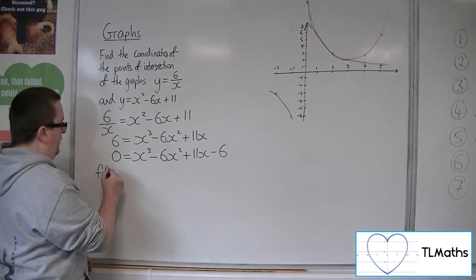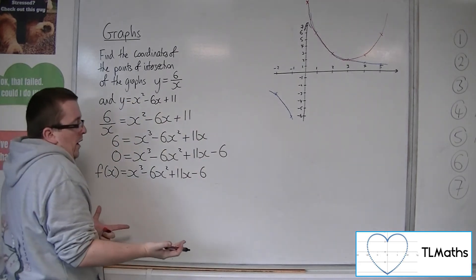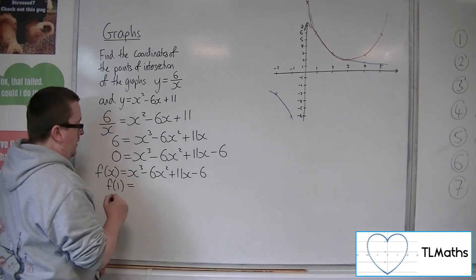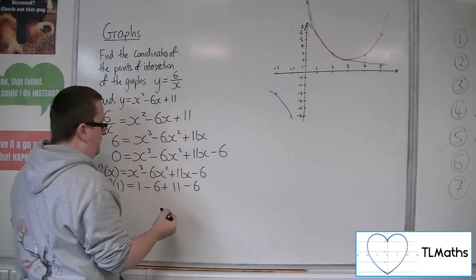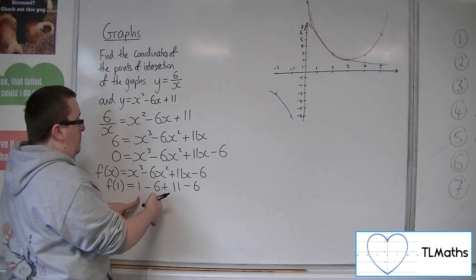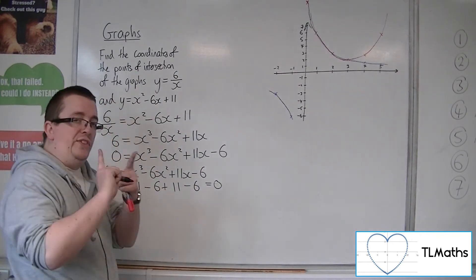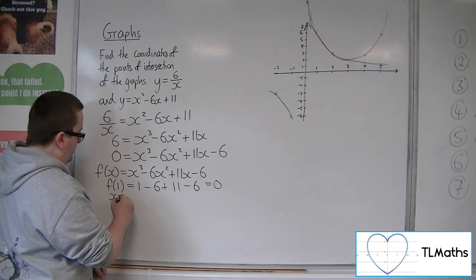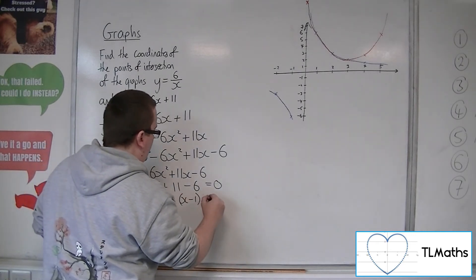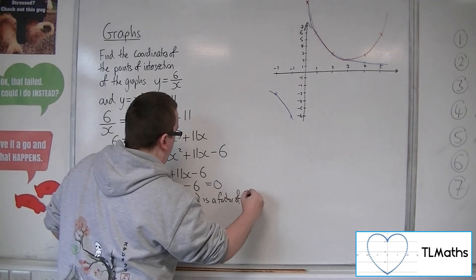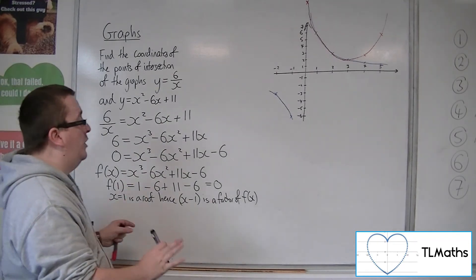So if f of x, so let's call this a function of x. The first one I would try is 1, f of 1. So I would get 1 cubed, take away 6 lots of 1 squared, plus 11 lots of 1, minus 6. So 1, take away 6, is minus 5, plus 11, is 6, take away 6, is 0. So what this is telling me is that x equals 1 is a root. Hence, x minus 1 is a factor of f of x. This is the factor theorem at work. So if x minus 1 is a factor of f of x, I can use polynomial division.